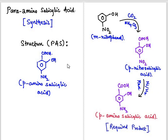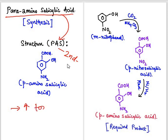In this video we are going to know about the synthesis of para-amino salicylic acid, denoted by PAS. It is a second-line anti-tubercular drug, meaning para-amino salicylic acid is somewhat more toxic and less effective as compared to first-line anti-tubercular drugs.